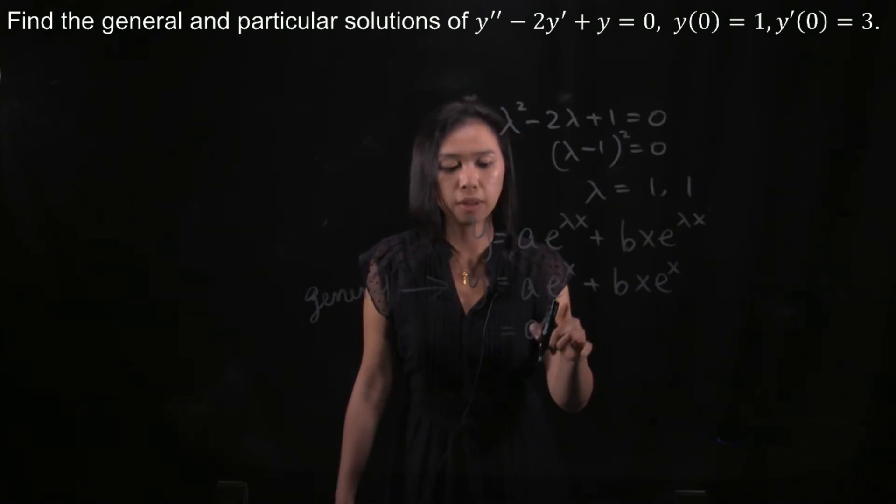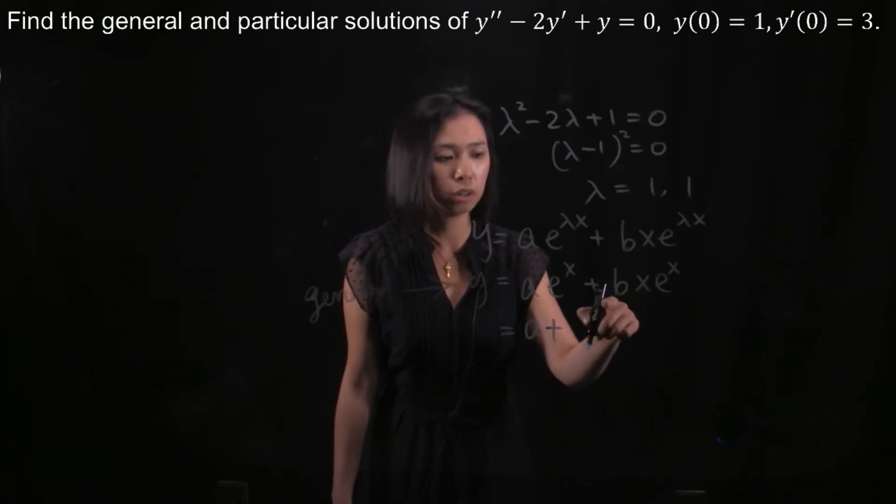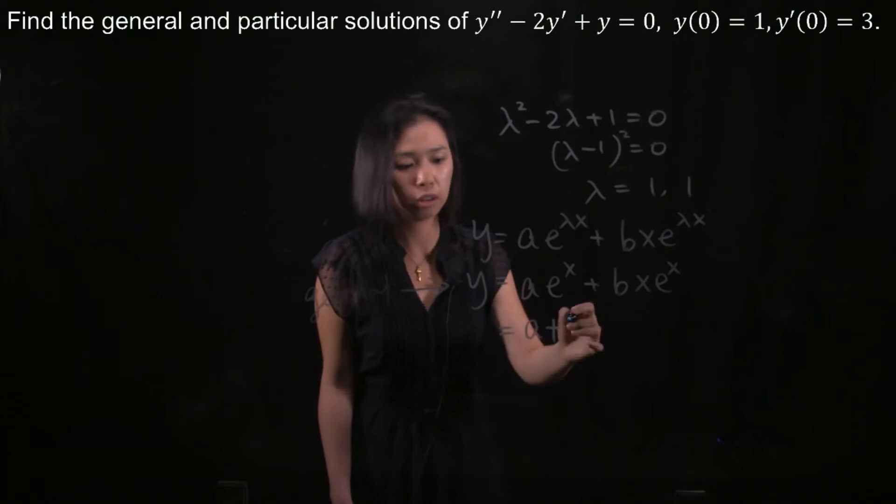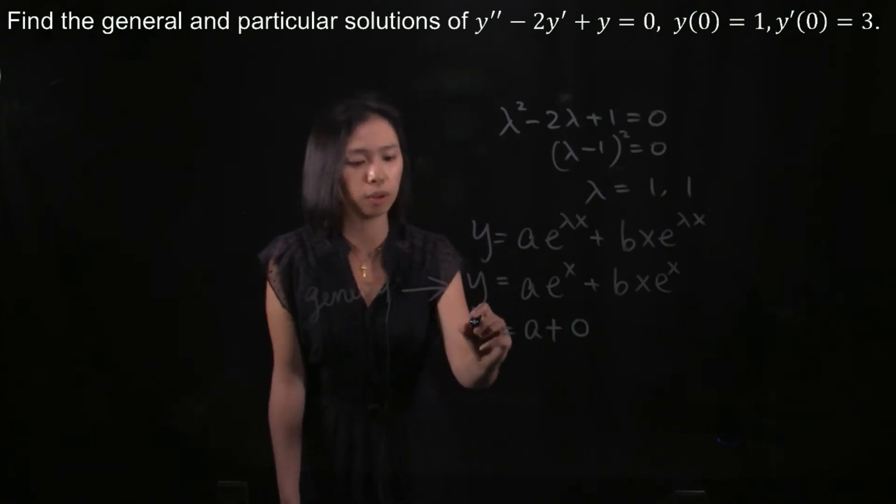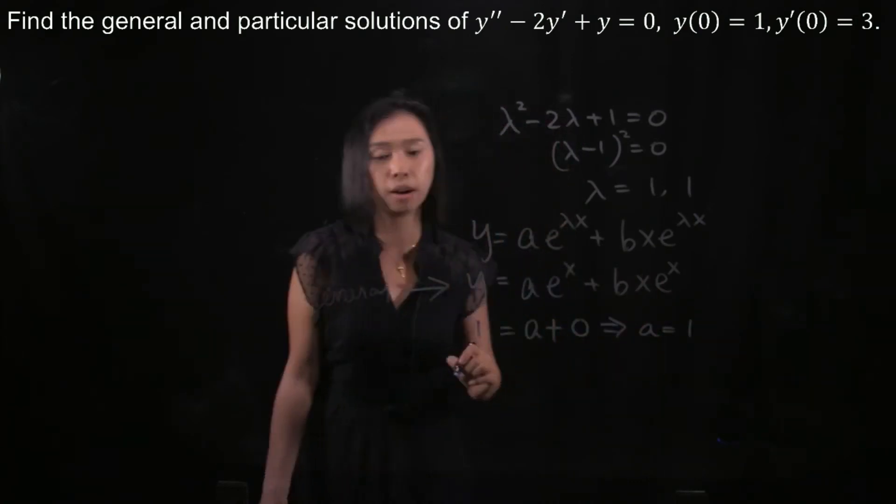e to the power of 0 is 1. Then 1 times a, you'll get a, plus x is 0, then it would be nothing. So 0 here. And then your y is 1, so here you will get a to be 1.